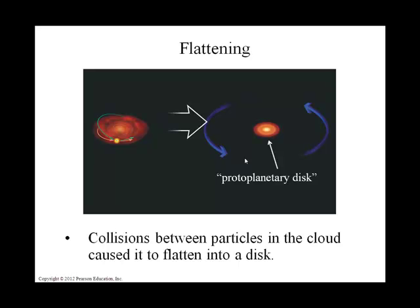We actually see this happening in other stars, and I'll show you some photos in a minute. What happened with our solar system is that this disk of material broke up into lanes, and within those lanes, planets formed.